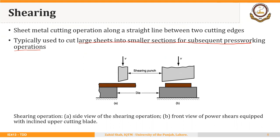Similarly, the long sheets are cut into smaller sheets using the shearing process. We require a shearing punch, a die, and a certain force applied by the punch. You can notice that there is an angle ground onto the punch — that is called the shear angle. This angle reduces the cutting forces required to cut the long sheet into smaller pieces, and there needs to be a certain clearance between punch and die, which we will discuss later in this lecture.